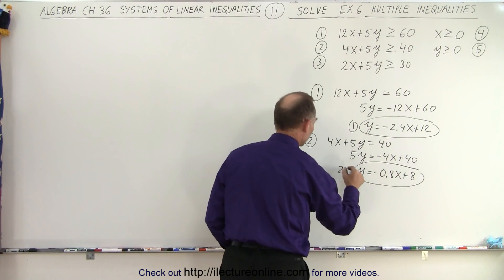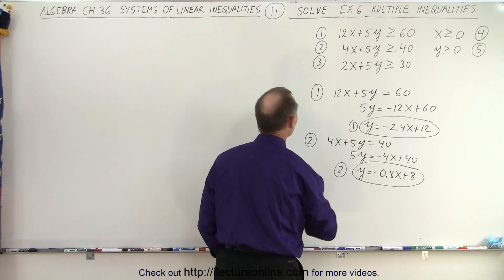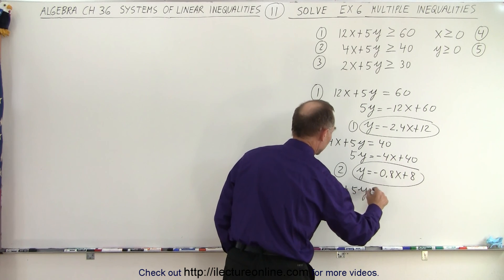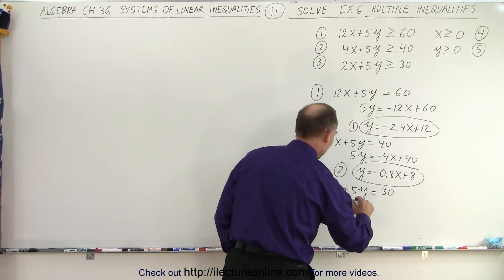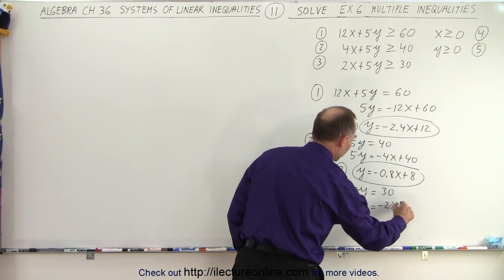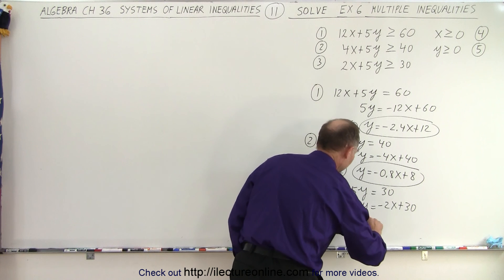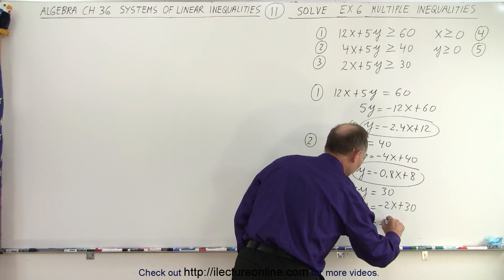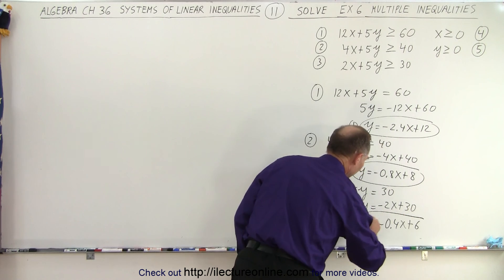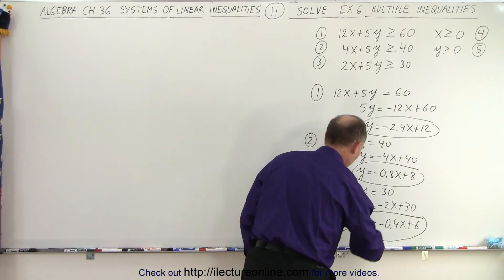That's equation number two. And for equation number three we end up with 2x plus 5y equals 30. We have 5y equals minus 2x plus 30, 5y equals minus 0.4x plus 6. And there's equation number three.